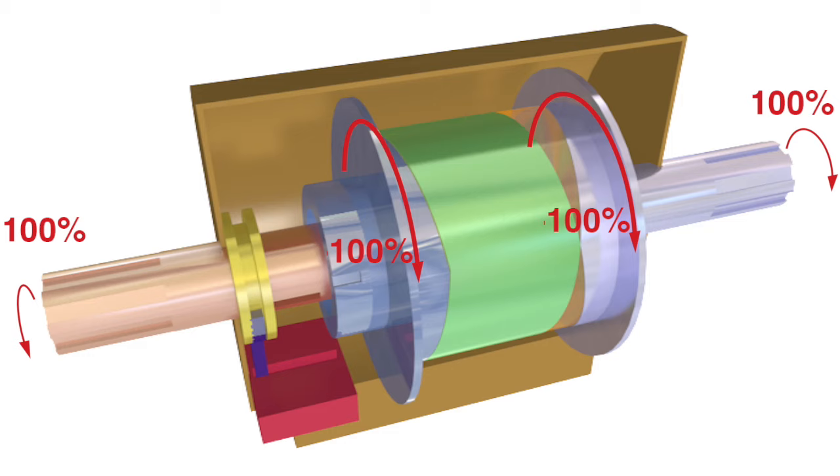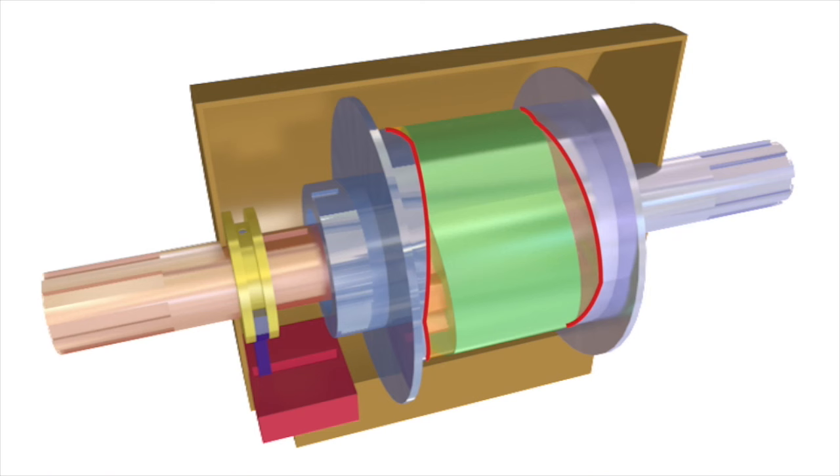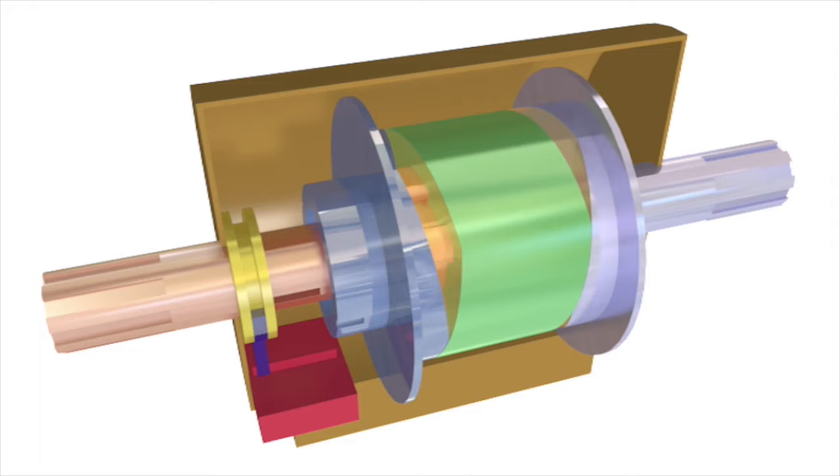The input shaft turns the input helix, which is always held tightly against the output drive discs, giving its energy directly to these discs and therefore to the output shaft.